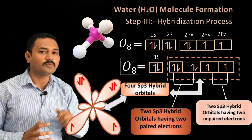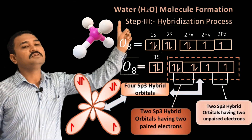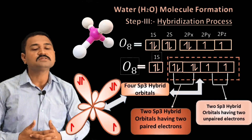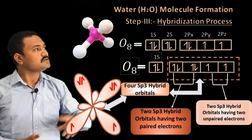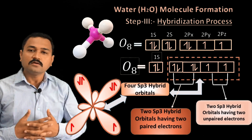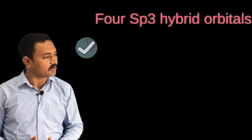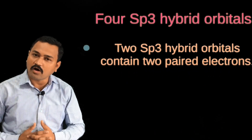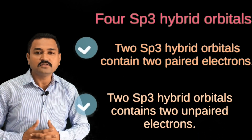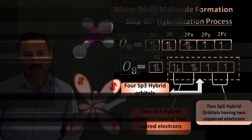Whenever we represent the hybridization process on a one-dimensional board, we show the mixing and recasting process by a dotted line drawn in the electronic configuration of the oxygen atom. An important point to observe: out of the four sp3 hybrid orbitals, two hybrid orbitals contain a paired electron while the other two contain unpaired electrons.